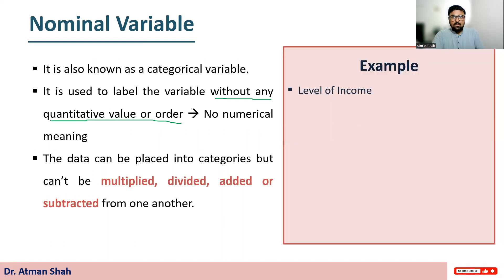See this example. Suppose we are measuring level of income. In level of income, we have three categories. So we assign 1 to low income group, 2 to middle income group and 3 to high income group.